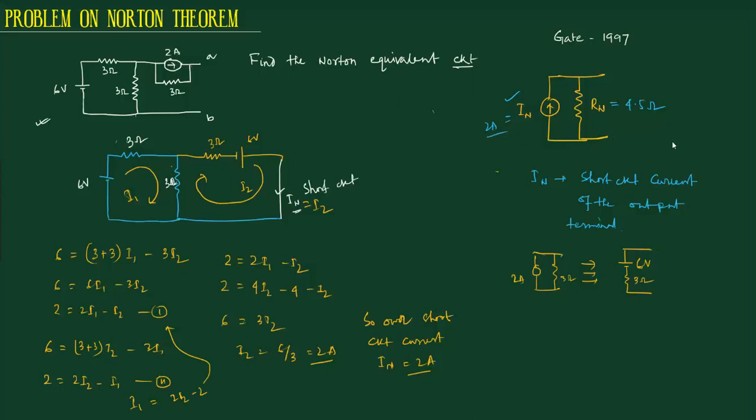This is the Norton equivalent circuit. The Norton resistance is 4.5 ohm and the current source is 2 ampere.